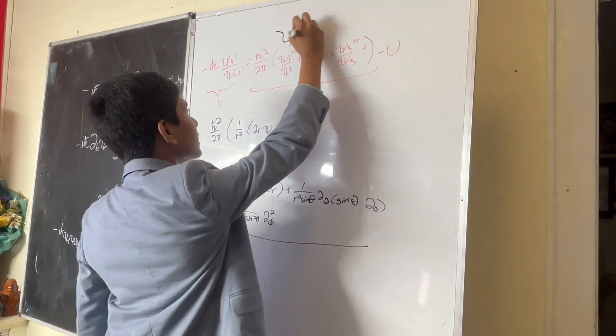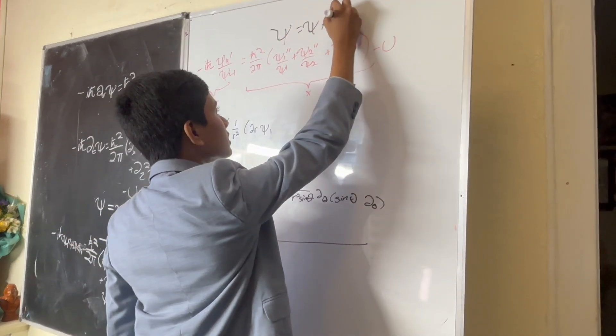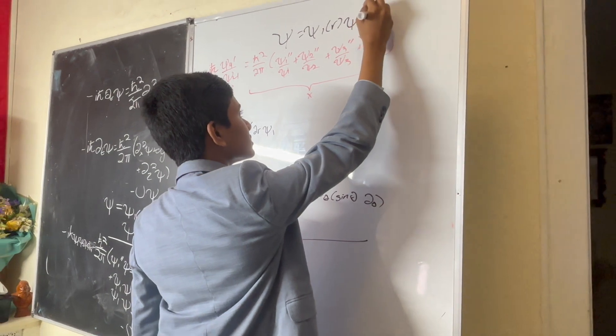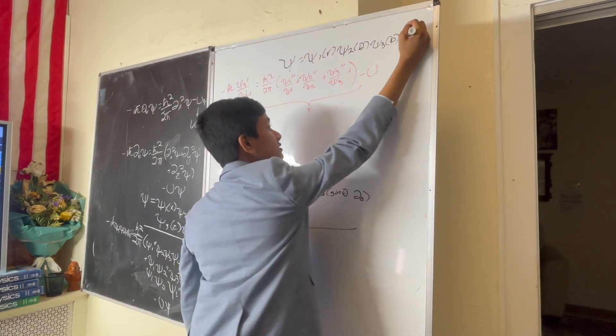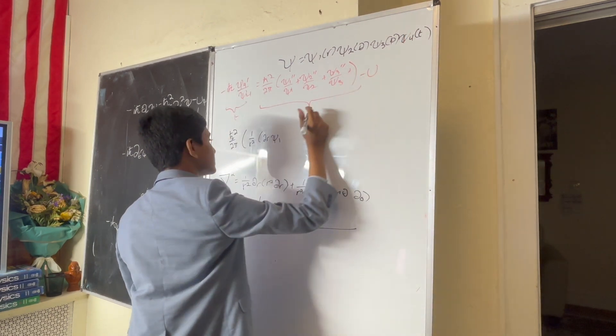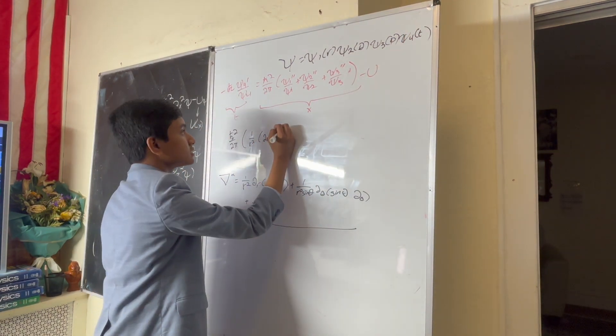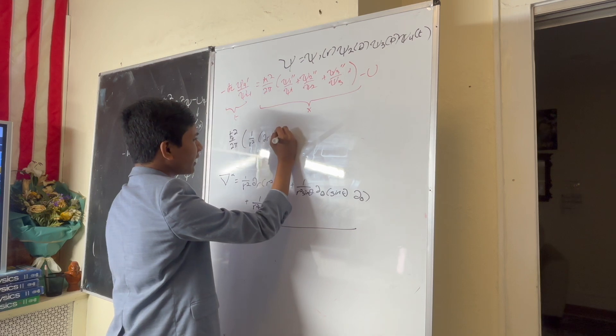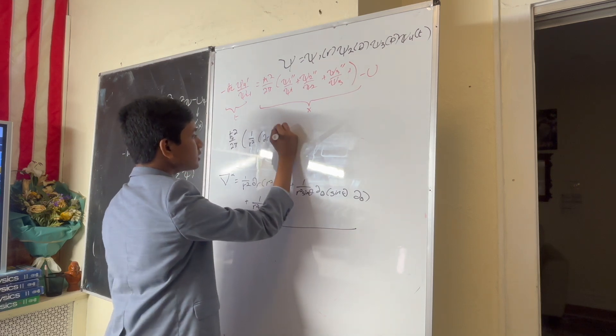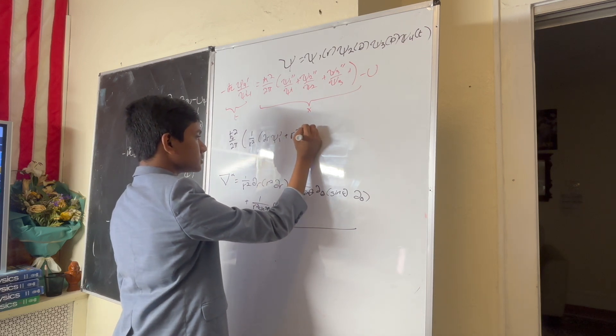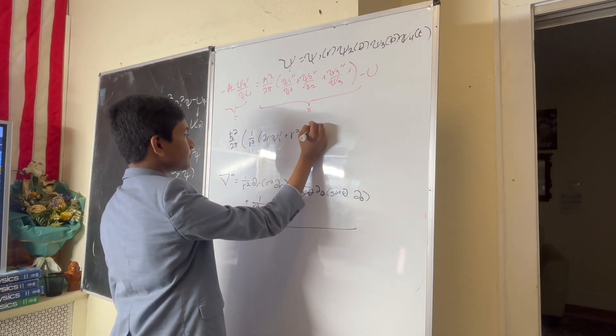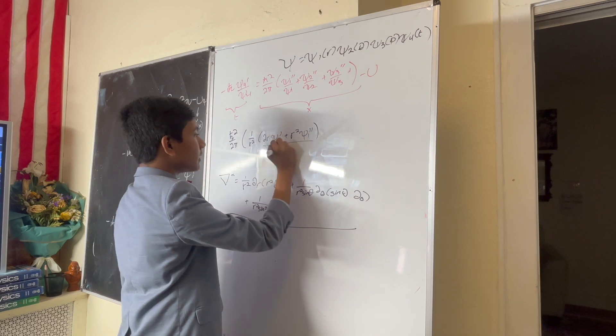So we're going to break this into psi 1 of r, psi 2 of theta, psi 3 of phi, psi 4 of time. This is going to be 2r psi 1 prime, plus r squared psi 1 double prime, divided by psi 1.